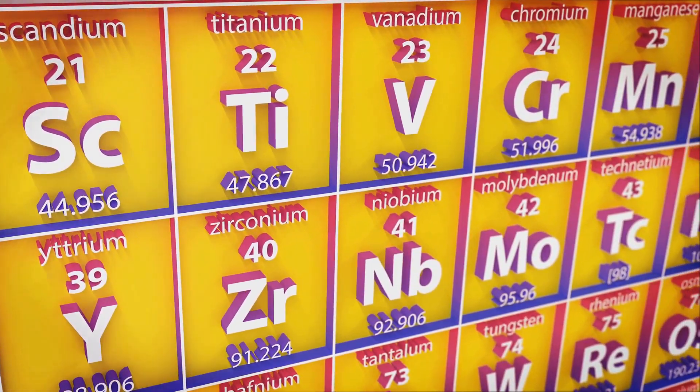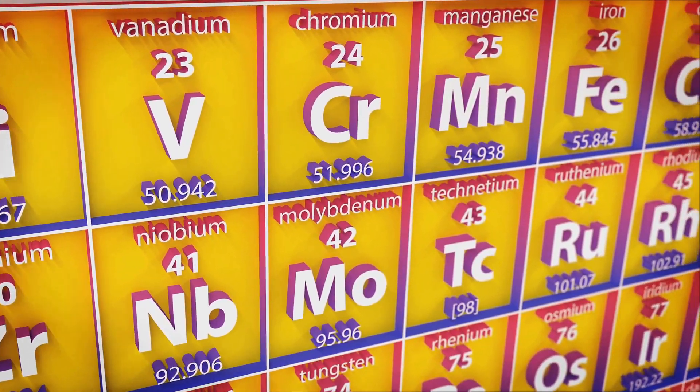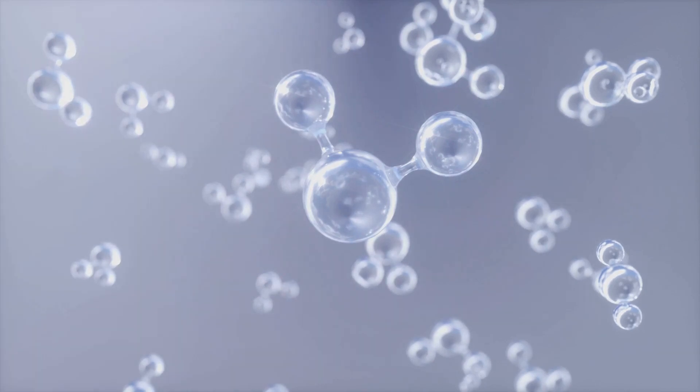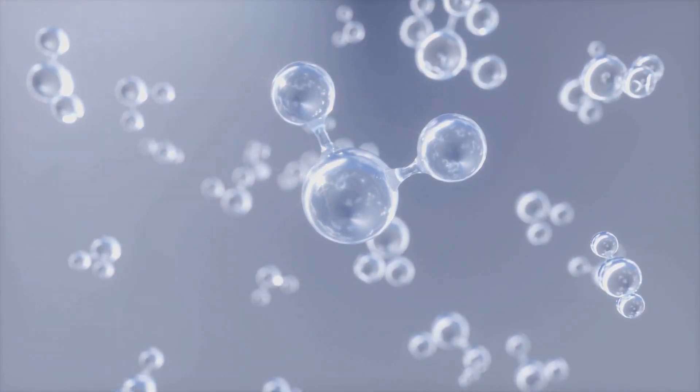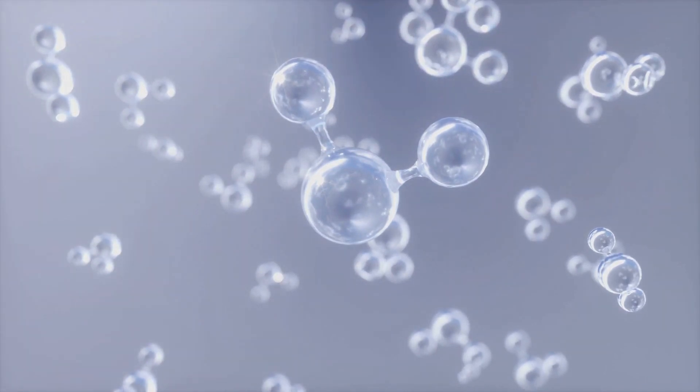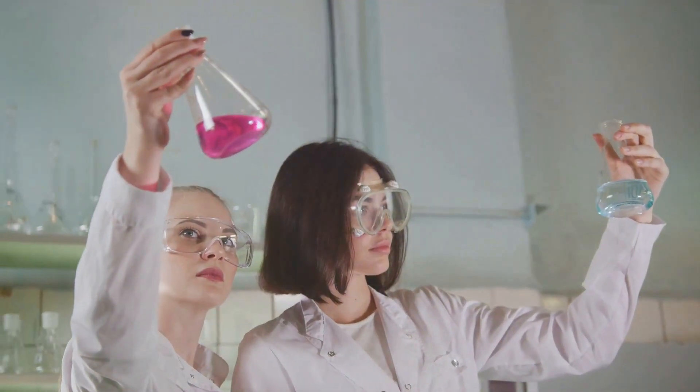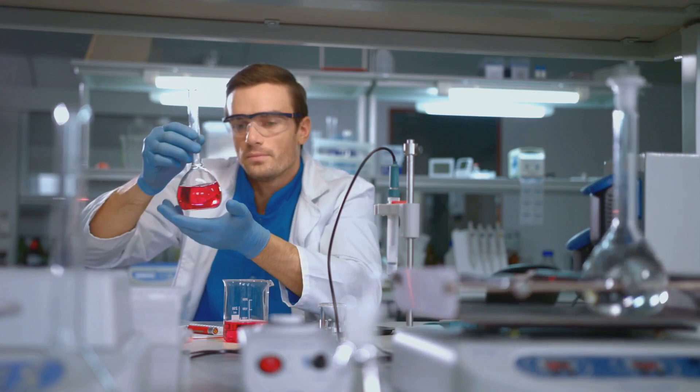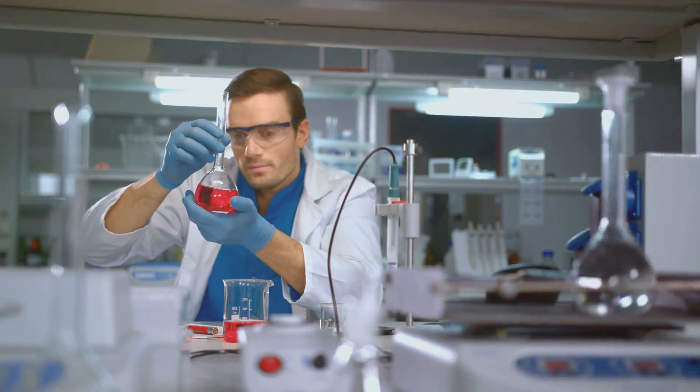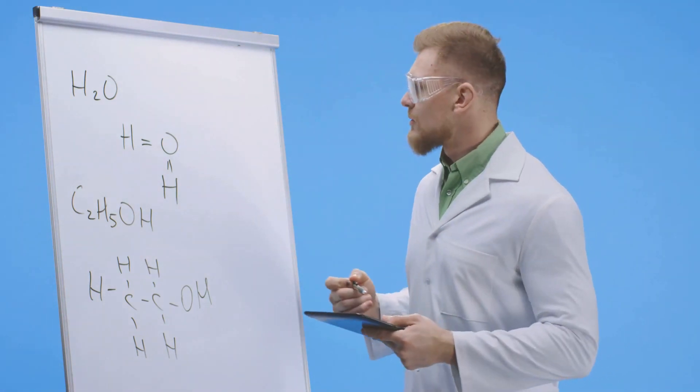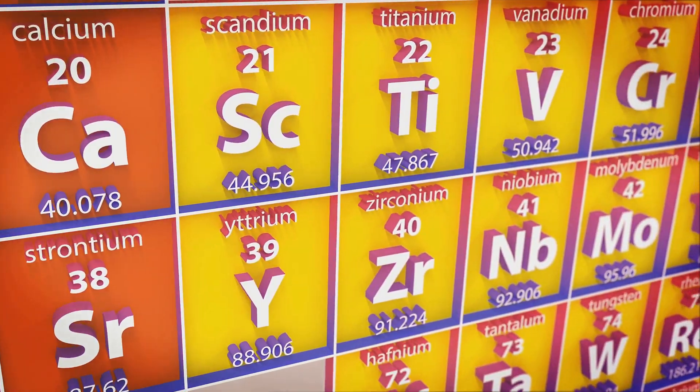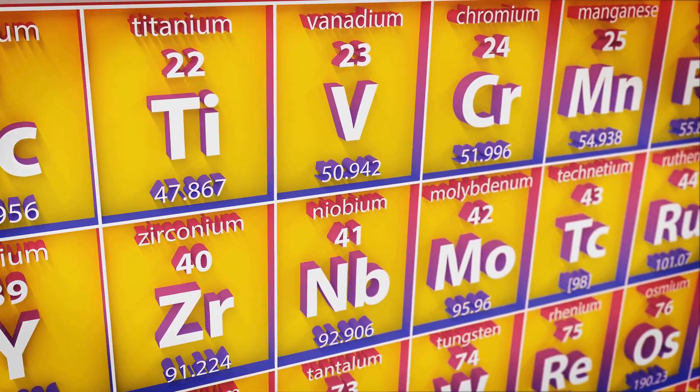The elements you see are the building blocks of matter. They make up everything around us, from the air we breathe to the water we drink, and even the very cells that make up our bodies. They are pure substances that cannot be broken down into simpler substances by ordinary chemical means. Each element is unique, defined by the number of protons it has in its atomic nucleus. This is known as the atomic number, and it determines the identity of the element.